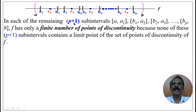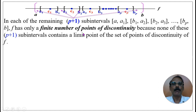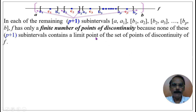In each of the remaining p+1 subintervals — namely [a, a₁], [b₁, a₂], [b₂, a₃], …, [bₚ, b] — f has only a finite number of points of discontinuity, because none of these p+1 subintervals contains a limit point of the set of points of discontinuity of f.